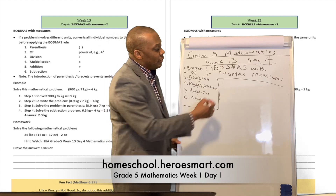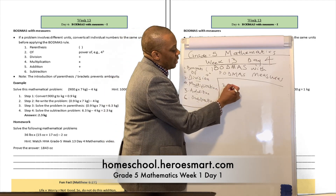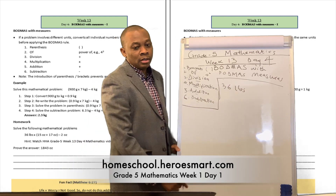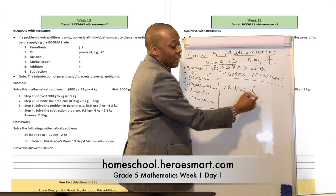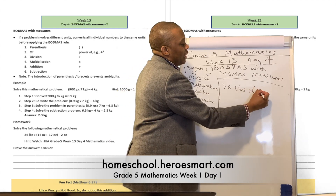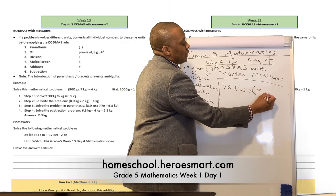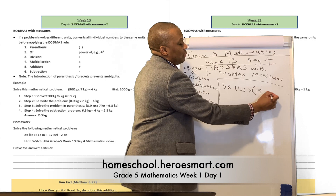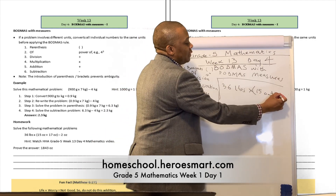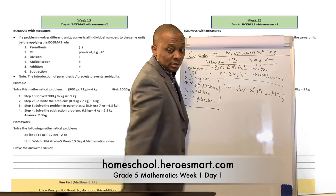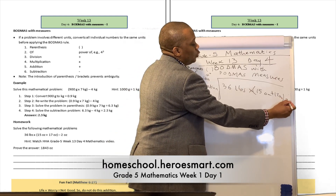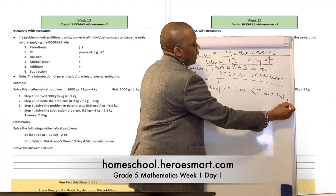So let's say that we have 36 pounds, multiplied by the quantity of 15 ounces plus 17 ounces, and then minus 2 ounces.